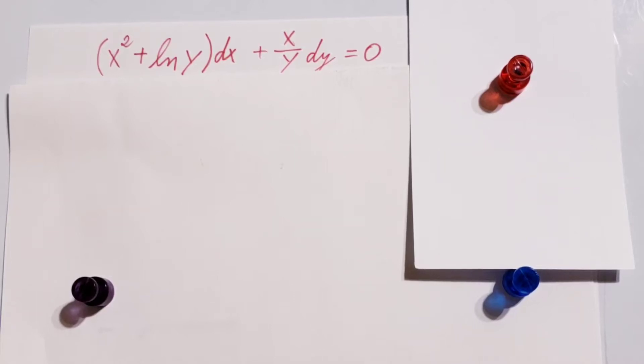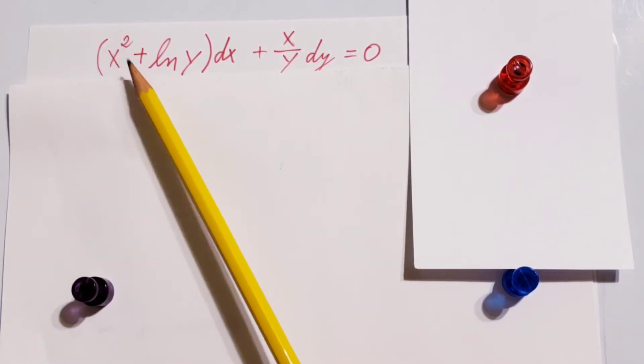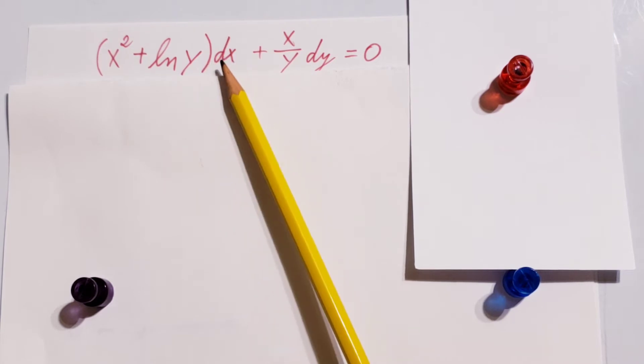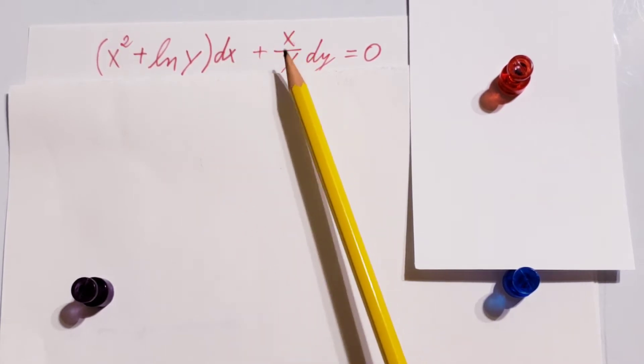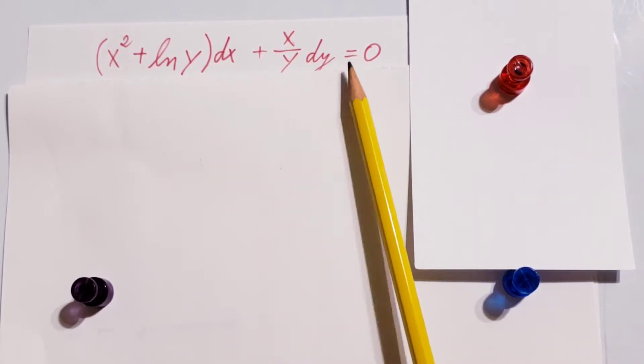Let's solve this differential equation: x squared plus ln of y dx plus x over y dy equals 0.